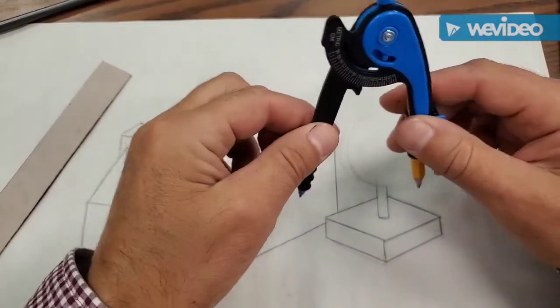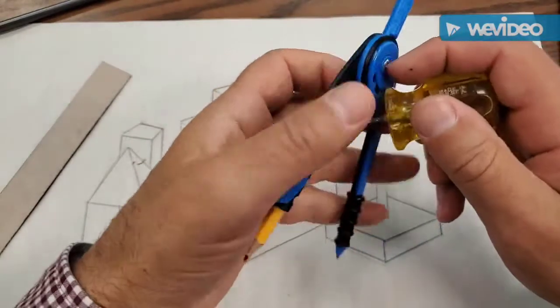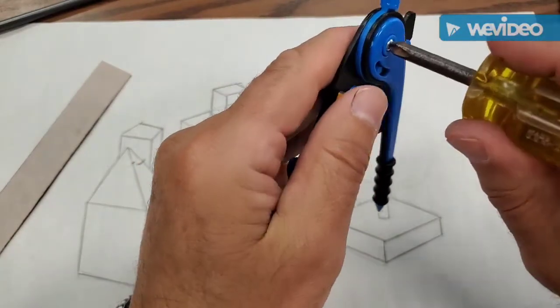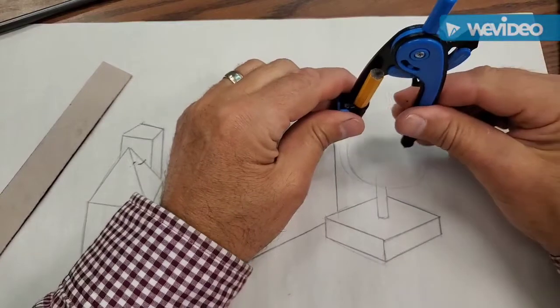Now, one thing, if your compass is really too flexible this way, I've got a little screwdriver that you can use right here to tighten that compass up. That way it holds itself really sturdy.